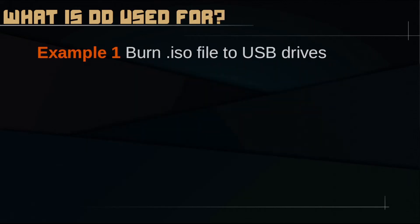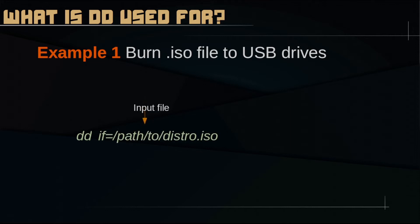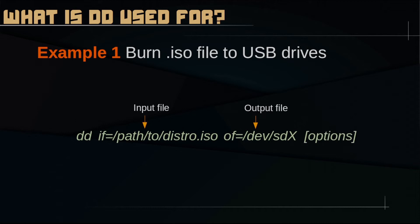So what is DD used for? You can burn a Unix-like distro onto a pen drive using the following command: type DD, then followed by the input file — if equals the path to the ISO file — and then of, which stands for output file, equals the device name of your USB drive. After this, you can type several options regarding performance, progress status, or data errors.